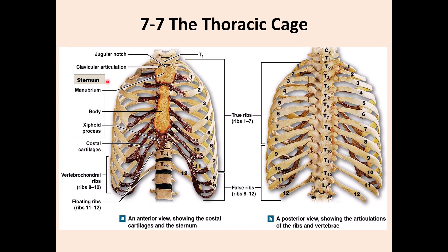This bone is called the sternum. The sternum has 3 different parts: one is called the manubrium, the second part is called the body, and the third part is called the xiphoid process. The xiphoid process initially is a cartilage, and after age 40, it ossifies and becomes a bone.